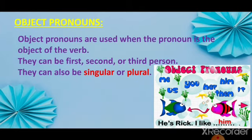Now, what are object pronouns? Object pronouns are used when the pronoun is the object of the verb. They can be first, second, or third person, and they can also be singular or plural. The object pronouns are: me, you, us, her, him, them, and it.